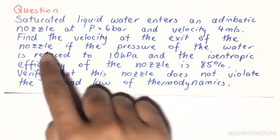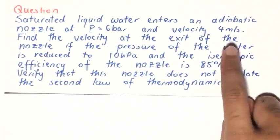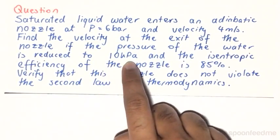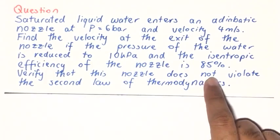Find the velocity at the exit of the nozzle if the pressure of the water is reduced to 10 kilopascals and the isentropic efficiency of the nozzle is 85%.